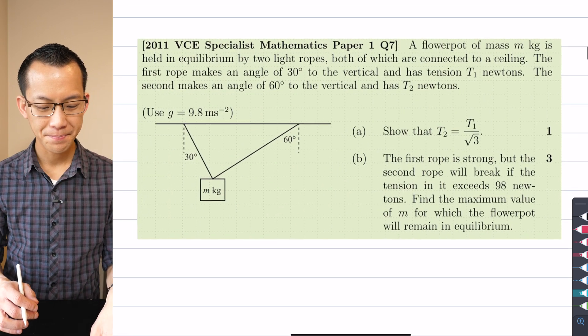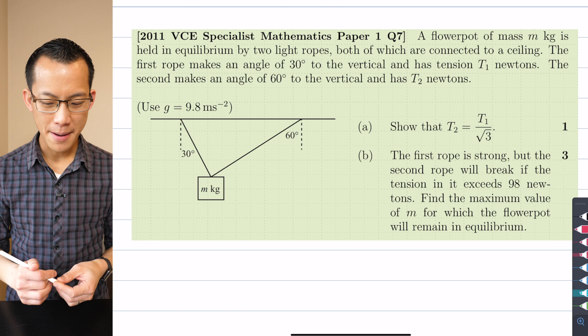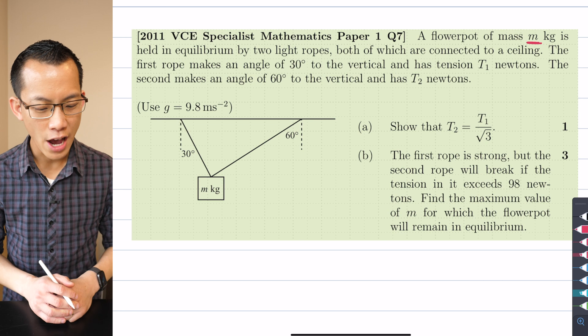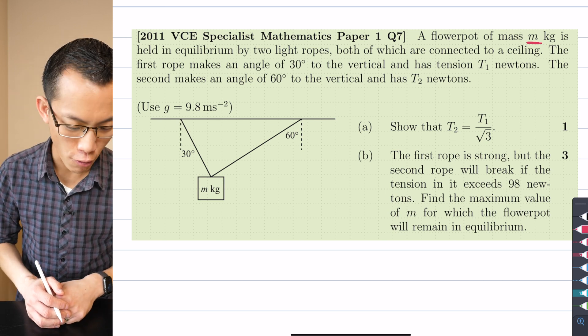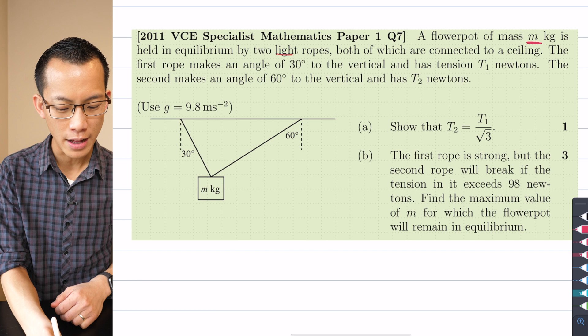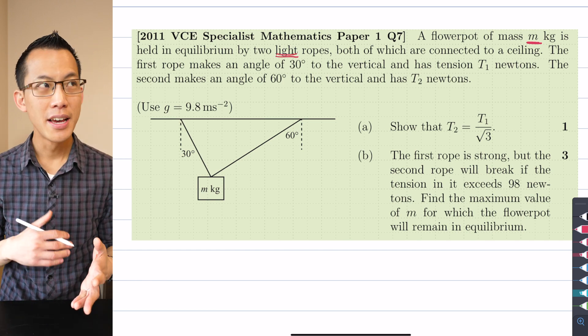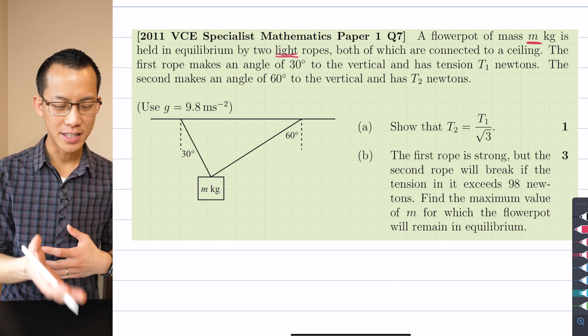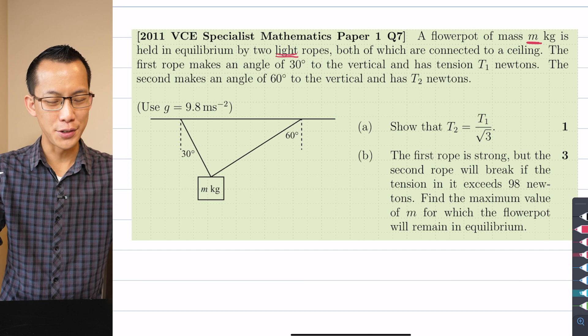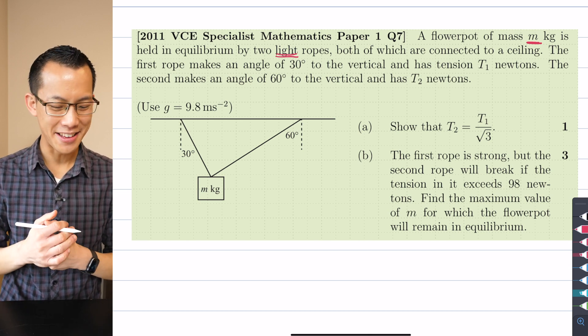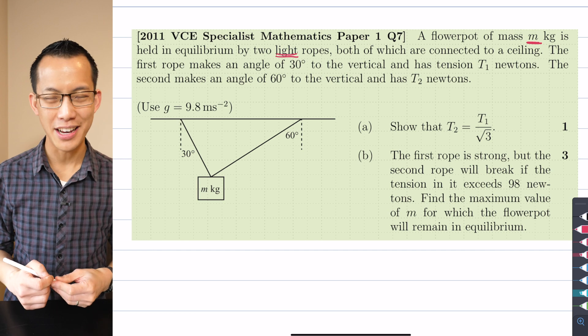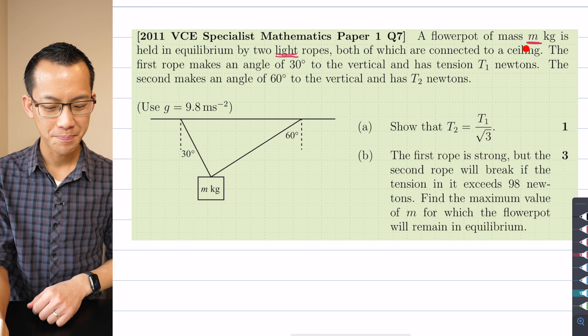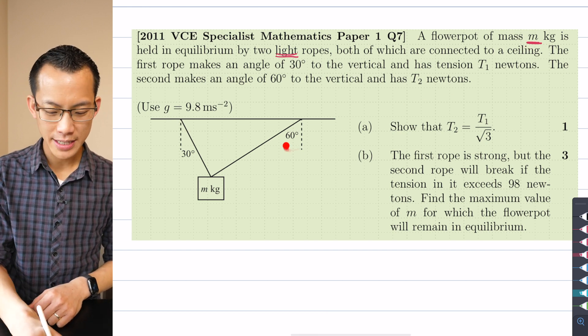I'm going to need to resolve the horizontal and vertical components, so have a look at this one with me. This is from a Victorian paper. It says a flower pot of mass m kilograms is held in equilibrium by two light ropes. When they talk about a light rope all they mean is the ropes don't have any weight that we need to worry about, any significant mass. We're just going to think about the flower pot's mass which is m kilograms.